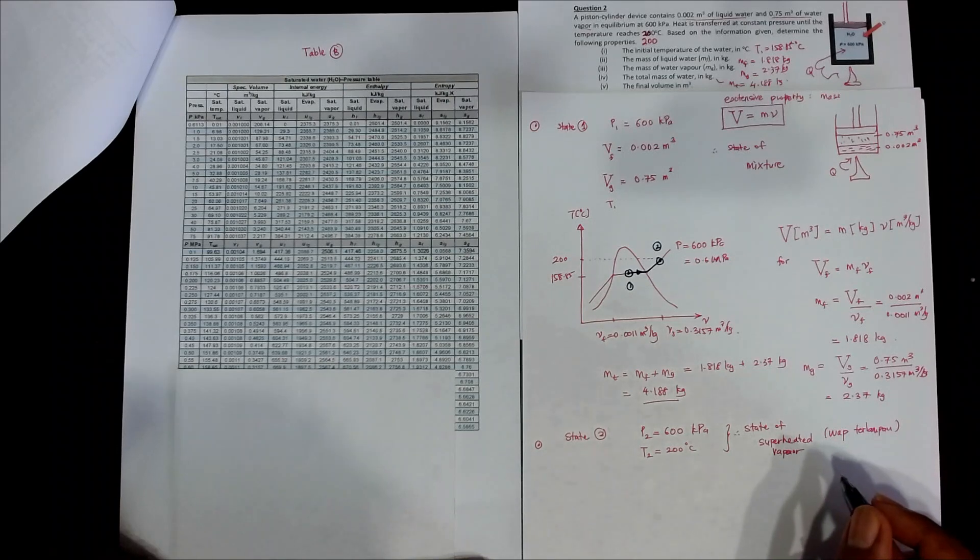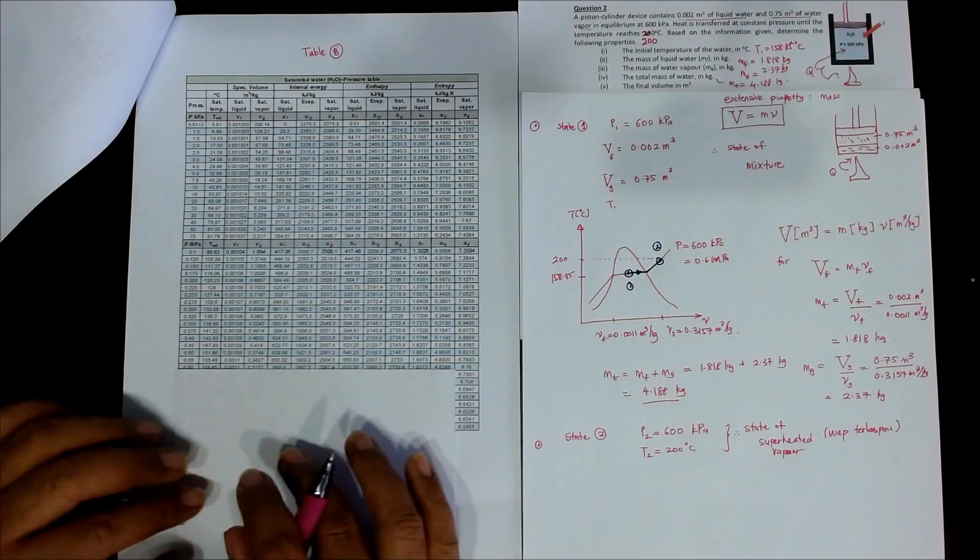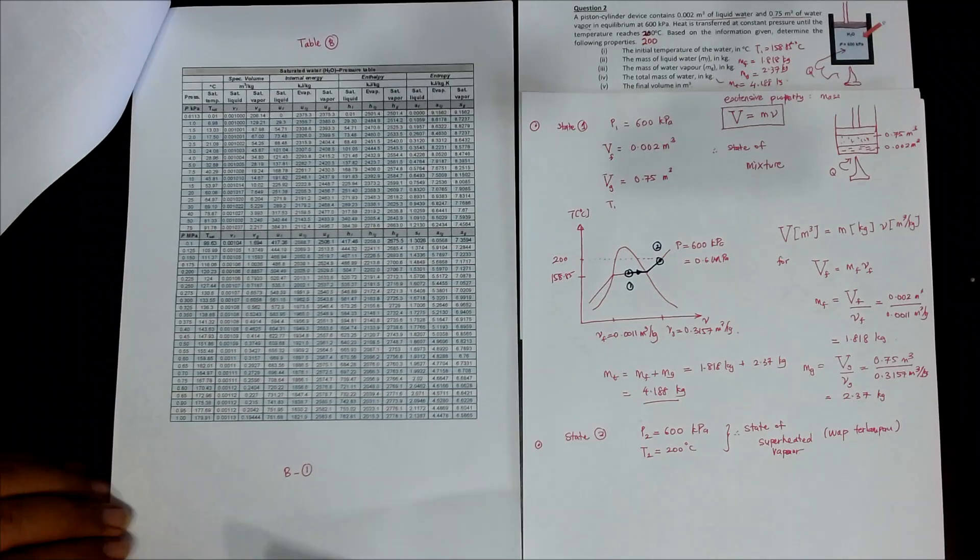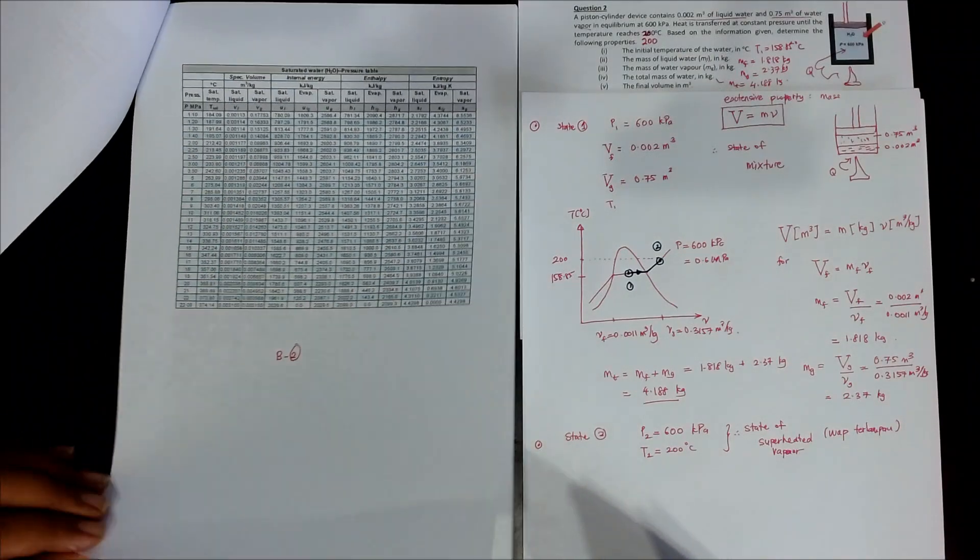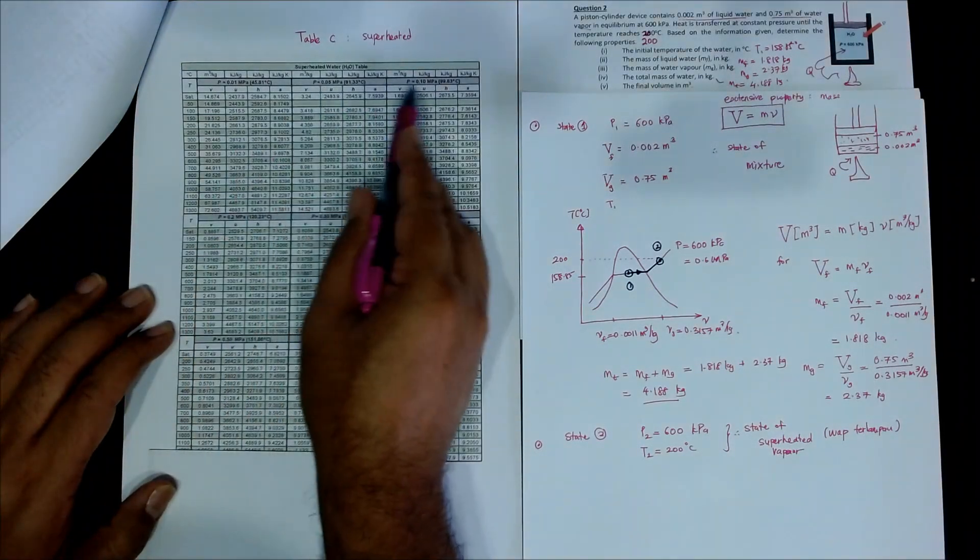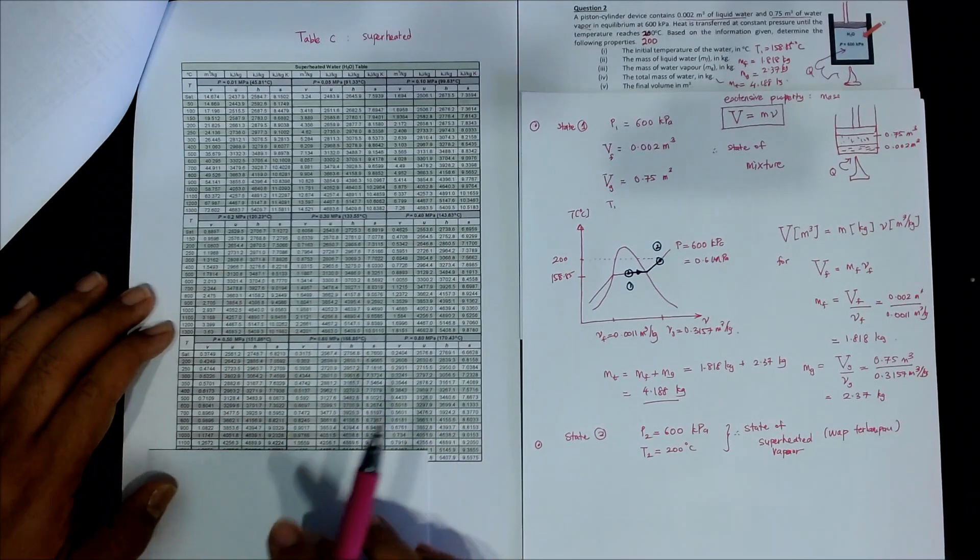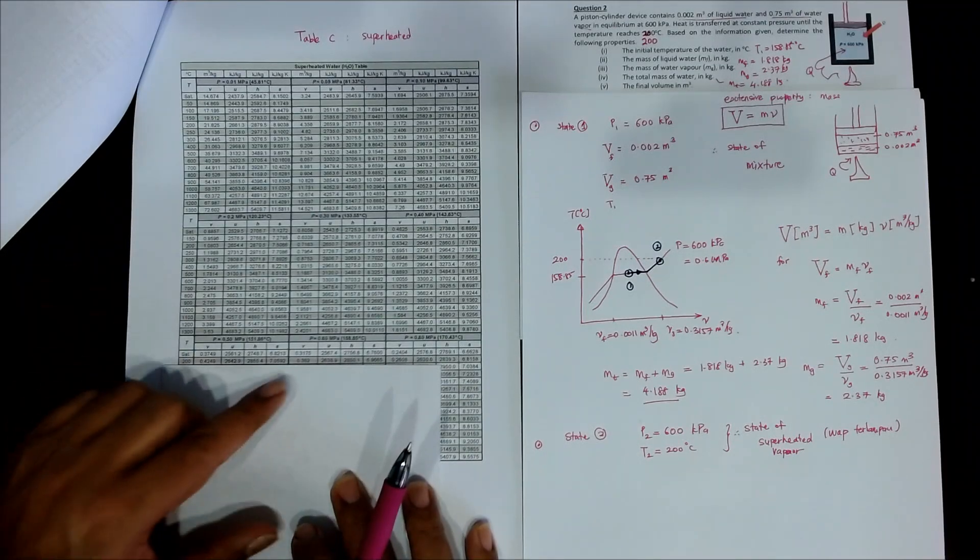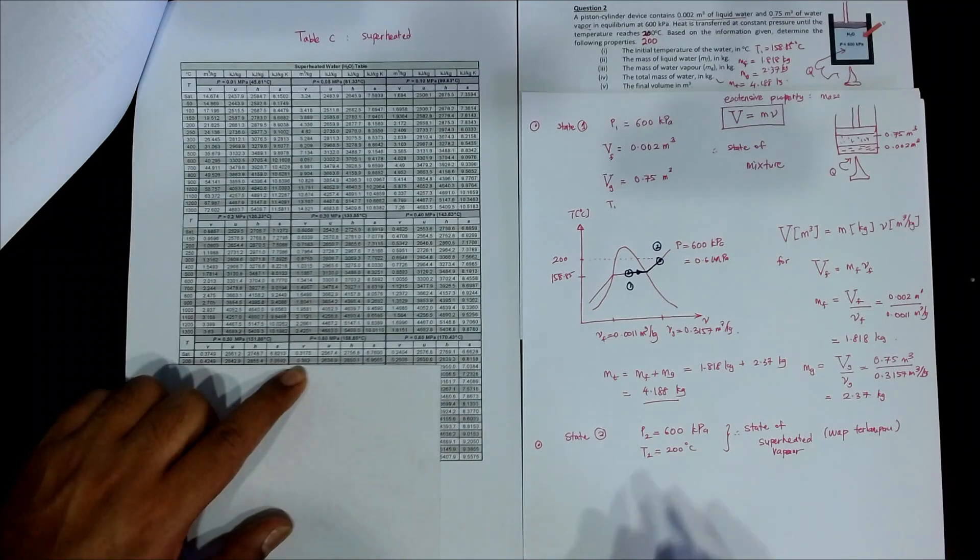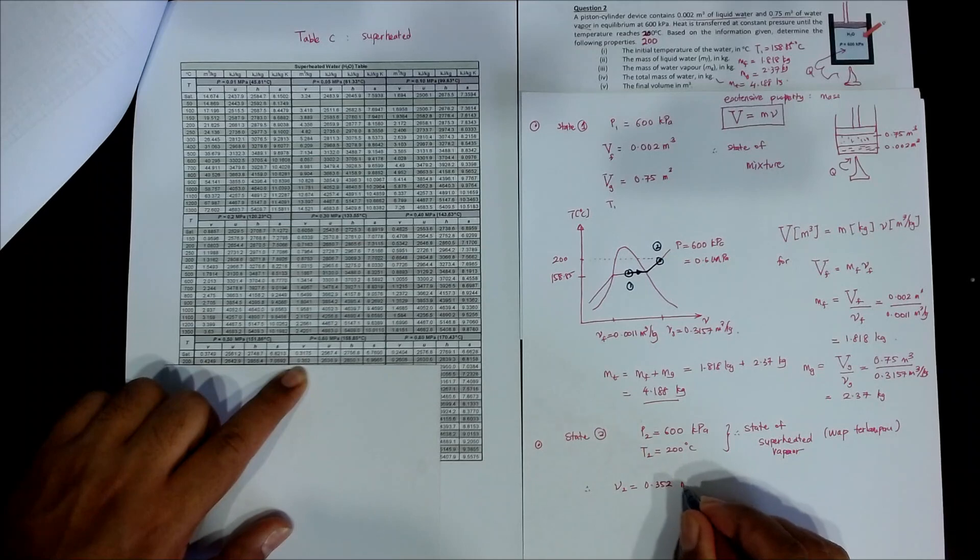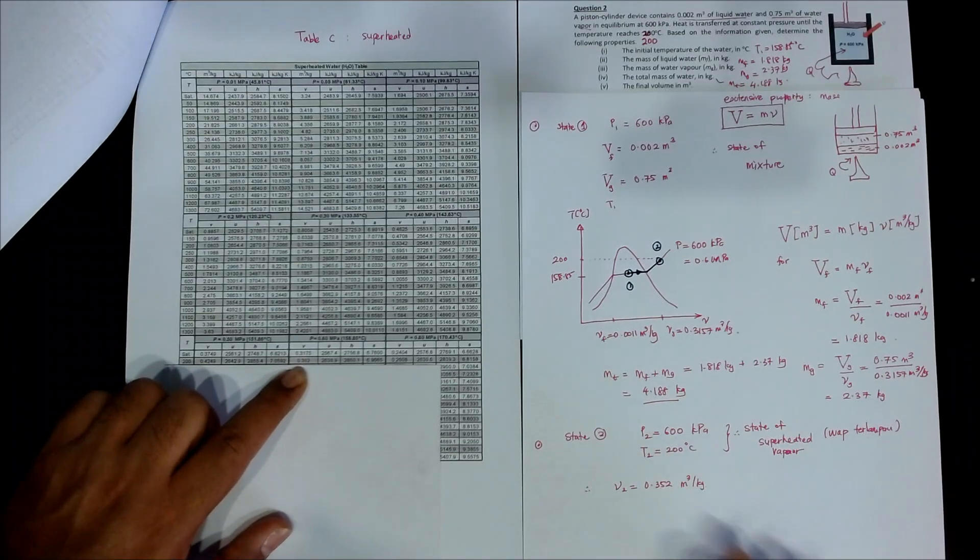That's means what? Because this is superheated, table A and table B are no longer suitable. So we have to move into table C. Table C is a specific table for superheated. So 0.6 is where? So 0.01, 0.05, 0.6 is here. So 0.6 and the temperature given is 200. So 0.6, 200. So 0.352. So V2 equals to, but the answer is 0.352 meter cube per kilogram. Did we get the answer right? Not yet. Why? They want it in meter cube.